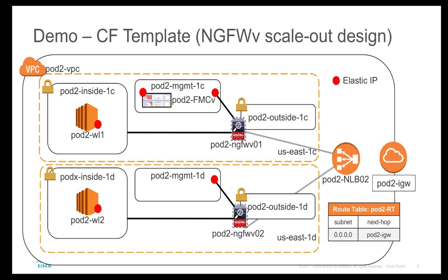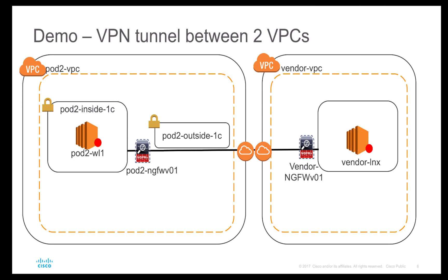The Network Load Balancer will forward traffic to the firewall for further inspection. On the health probe side, we probe application servers through the firewall — if a probe fails, that firewall is removed from the cluster. You can add multiple firewalls behind the load balancer within one availability zone, but for this demo I'll use one firewall per availability zone. I will also showcase a site-to-site VPN tunnel between two VPCs.